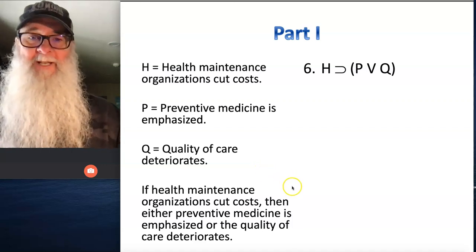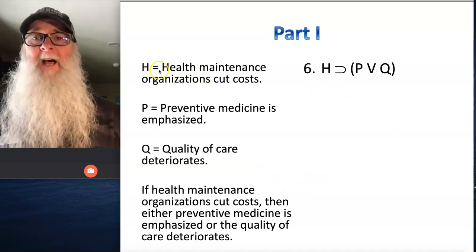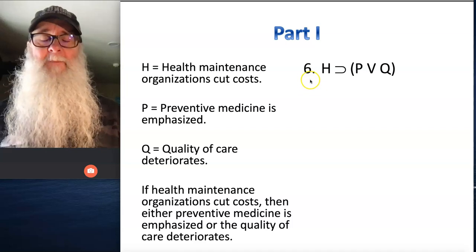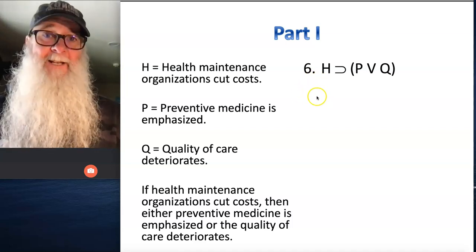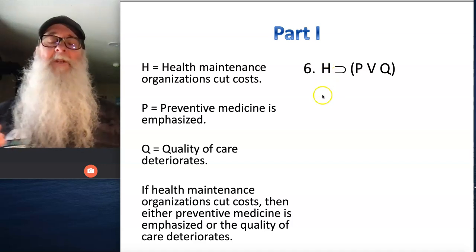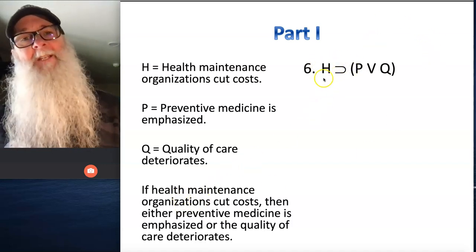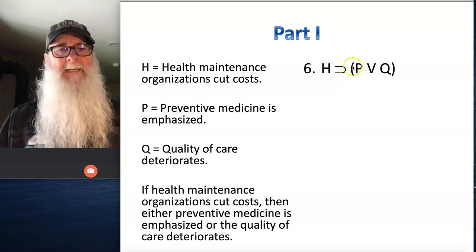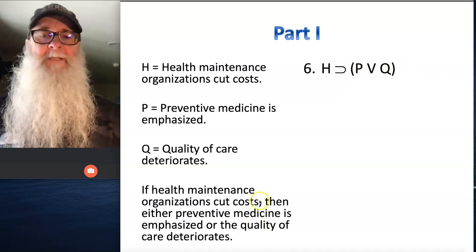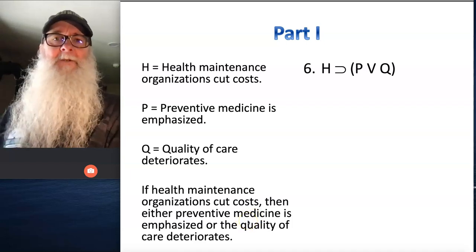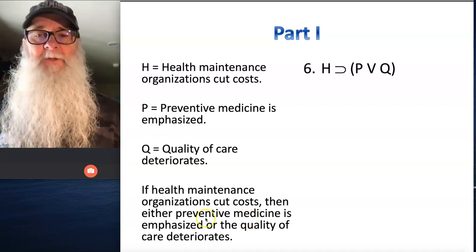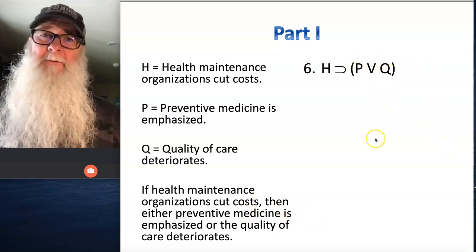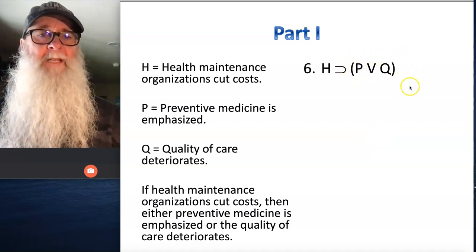Number six. We've got three sentences here, which means we're going to be using parentheses. I chose H, P, and Q to represent the statements, and with those as our propositions, we can see that we're translating an if-then conditional statement. Whatever follows the word 'if' is going to appear on the left-hand side of our horseshoe, and then the other statements appear on the right-hand side. We're going to need parentheses around P wedge Q because those are the two things that will be true if it's true that health maintenance organizations cut costs. We can have only one operator other than tilde outside of parentheses, so we group P wedge Q together.